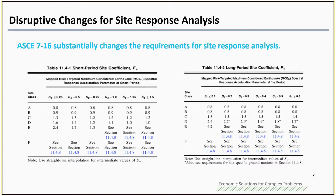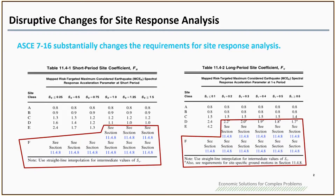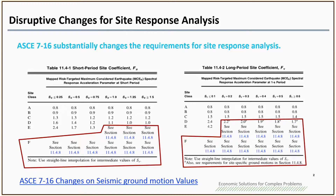The ASCE 716 substantially changes the requirements for site response analysis. As you can see, all the cases in this red area — right now the code requires you to do the site-specific response analysis. If you know ASCE 710 very well, at that version the site response analysis is only required for the site class F site. Right now it applies for the majority of cases of site class D and E, so you need a site response analysis. If you want to know the details of the changes, you can watch my other YouTube video: ASCE 716 changes on seismic ground motion values.